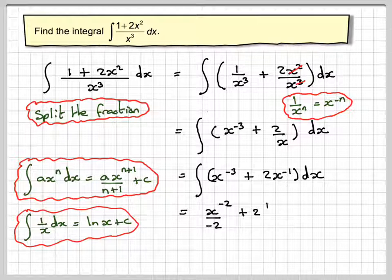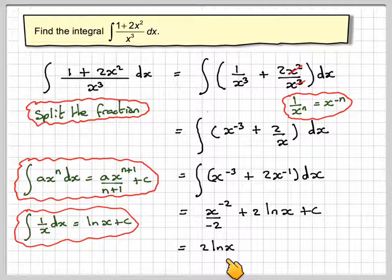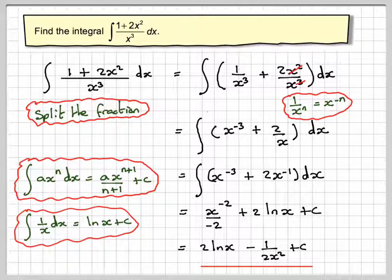So this becomes 2 times ln(x) plus c. So just tidying up a little bit, we'll take this out to the front, so this will become 2ln(x). Next bit will be negative 1/(2x²) + c, using this rule in sort of reverse.